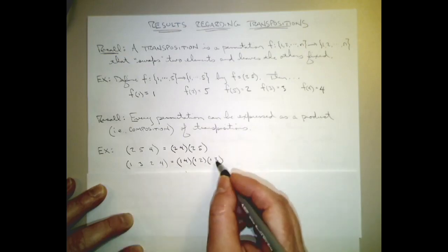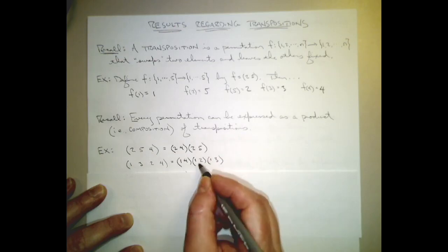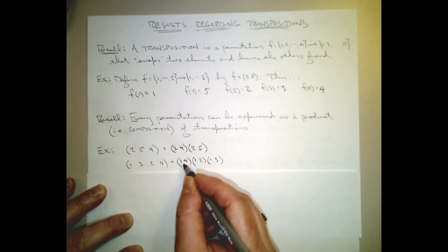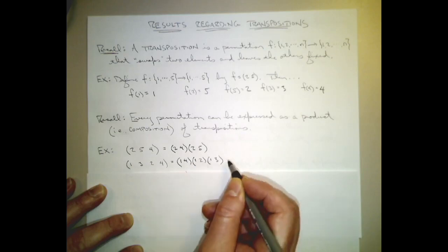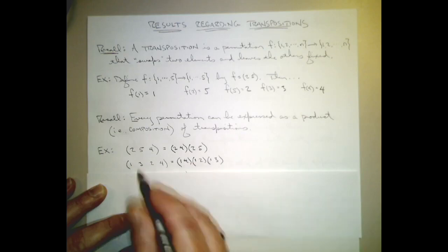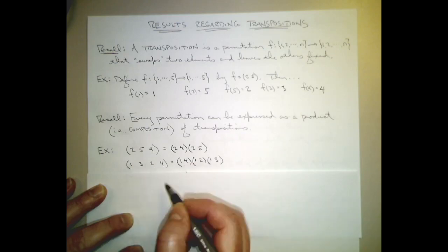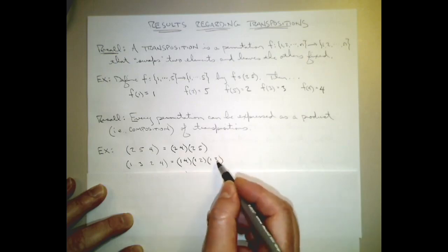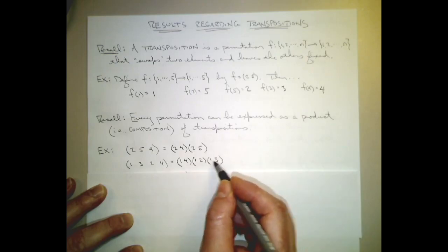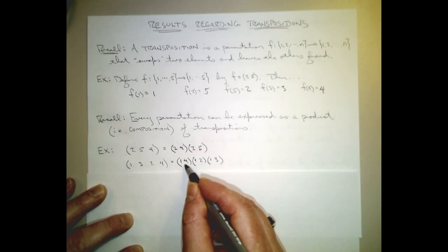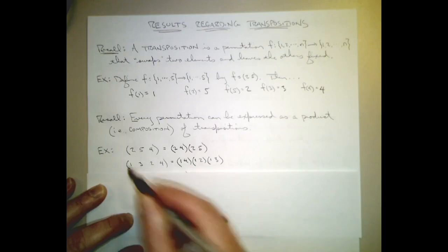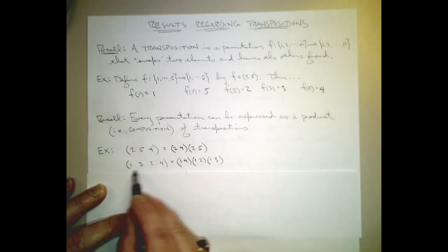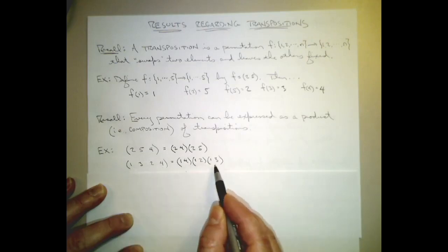Then 2: this function fixes it, this sends 2 to 1, and this picks 1 up and sends it to 4. So in total, 2 goes to 4, which is exactly what this cycle does. And finally, 4: this fixes 4, this fixes 4, and this sends 4 to 1 - exactly what that cycle does. So these functions are identical.